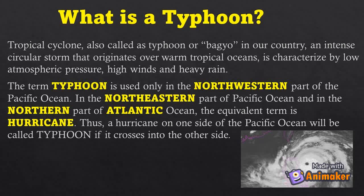What is a typhoon? A tropical cyclone — also called a typhoon, or 'bagyo' in our country — is an intense circular storm that originates over warm tropical oceans. It is characterized by low atmospheric pressure, high winds, and heavy rain. The term 'typhoon' is used only in the northwestern part of the Pacific Ocean. In the northern part of the Atlantic Ocean, the equivalent term is 'hurricane.' Thus, a hurricane on one side of the Pacific Ocean will be called a typhoon if it crosses to the other side.